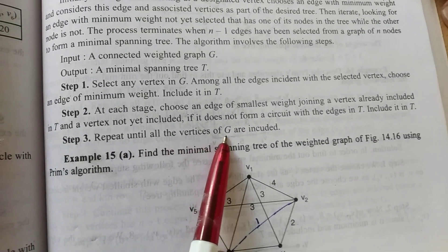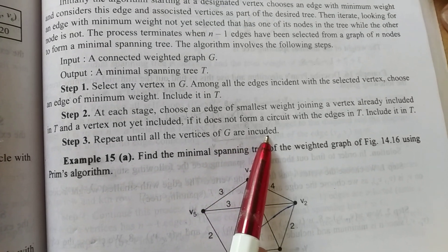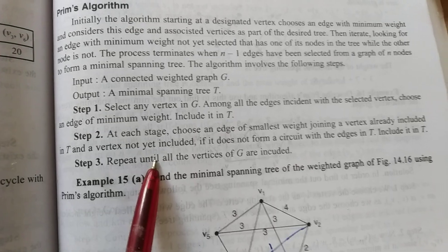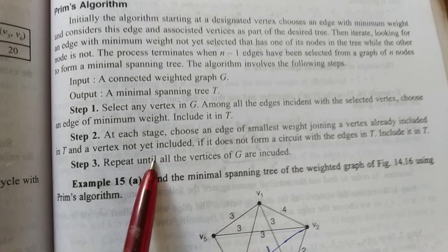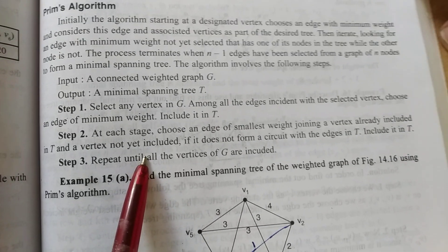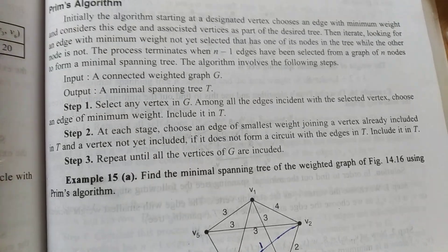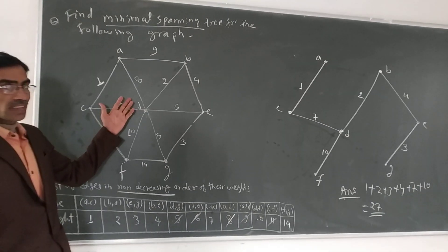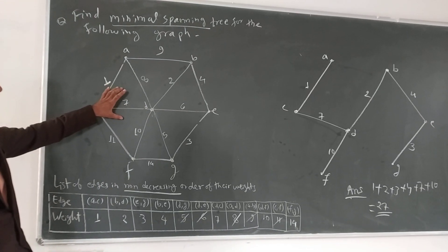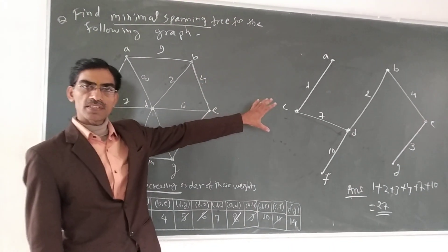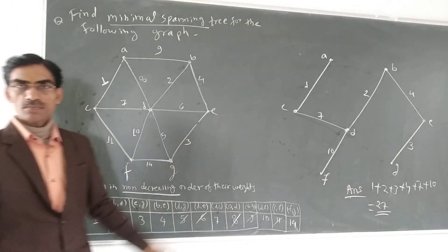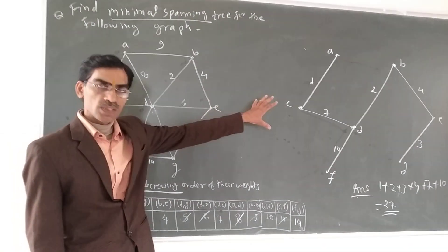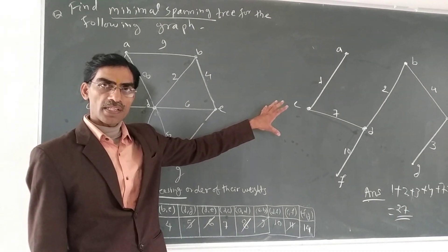Repeat until all the vertices of graph G are included. और ऐसा हम उस graph के सारे vertex के include होने तक करेंगे। चलिए last example को जो Kruskal से बनाए हैं, उसे Prim's से बनाकर देखते हैं — क्या same spanning tree बनता है?